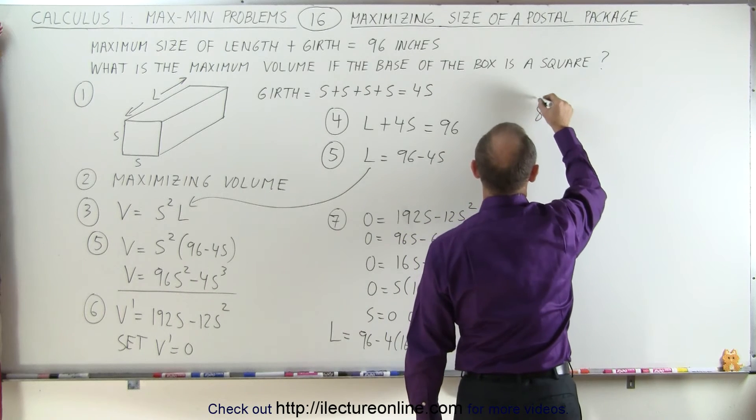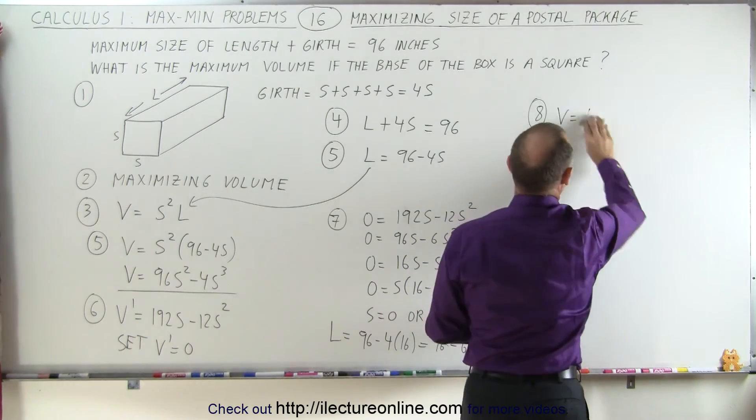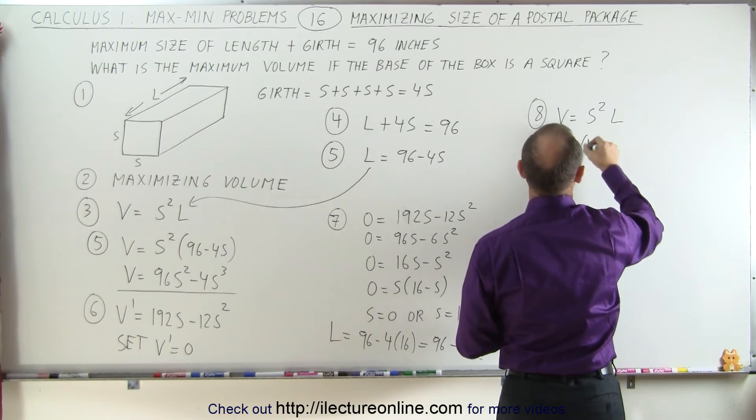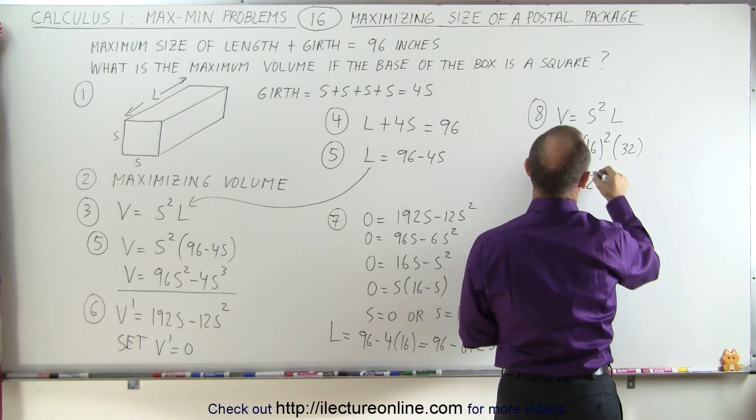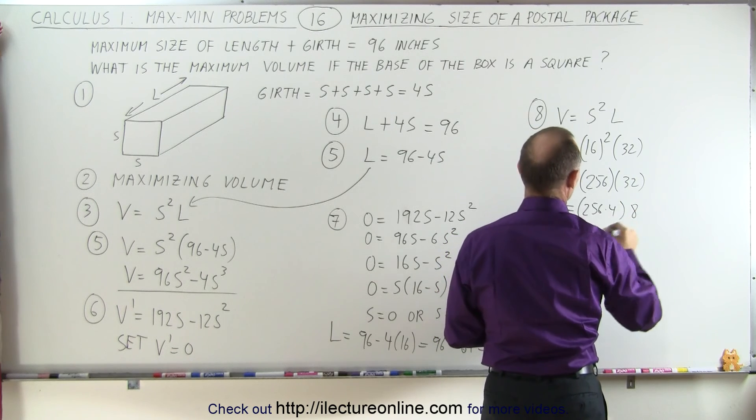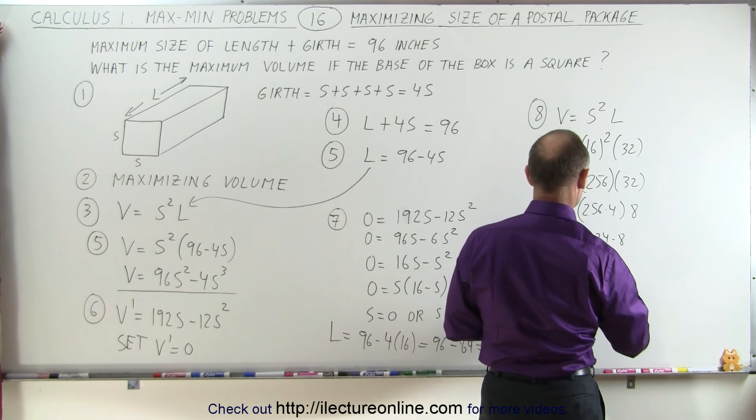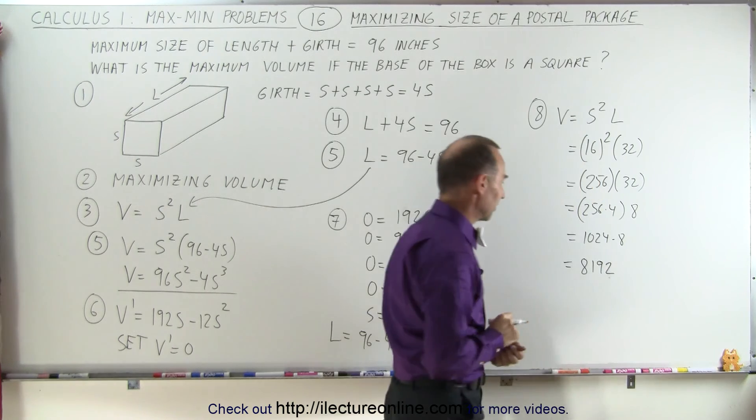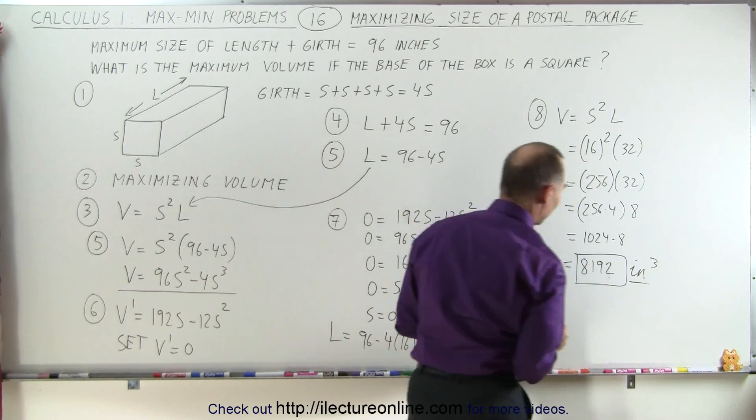The volume would be the area of the base, s², times the length L. That's 16² × 32. 16 squared is 256 multiplied by 32, which equals 256 × 4 × 8 = 1024 × 8 = 8192.